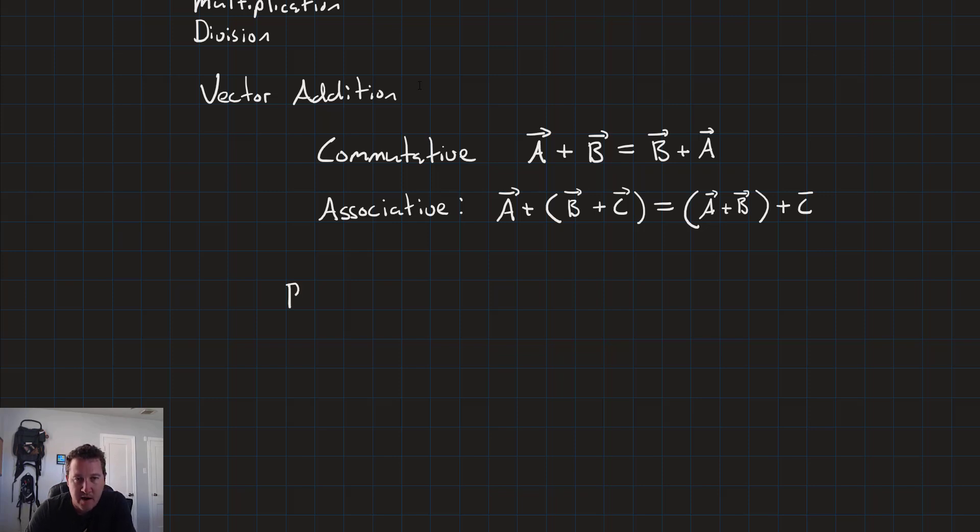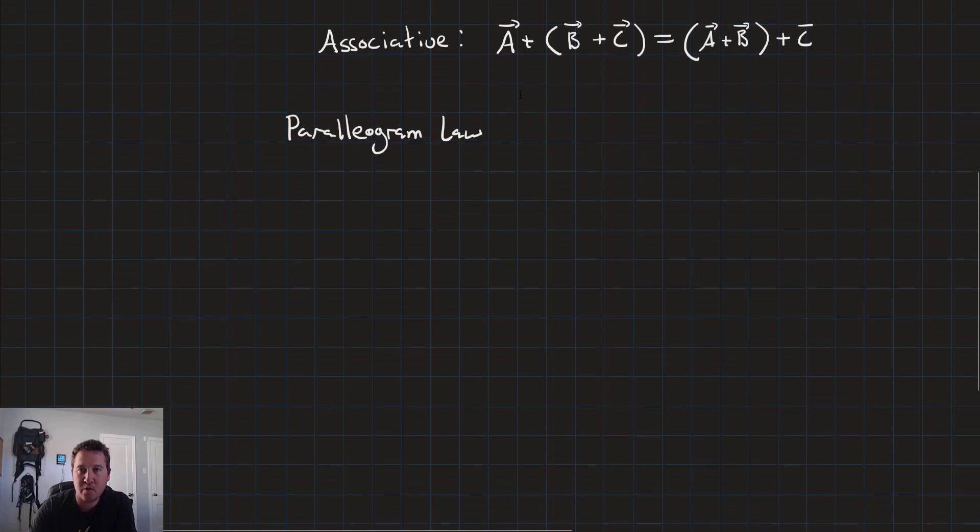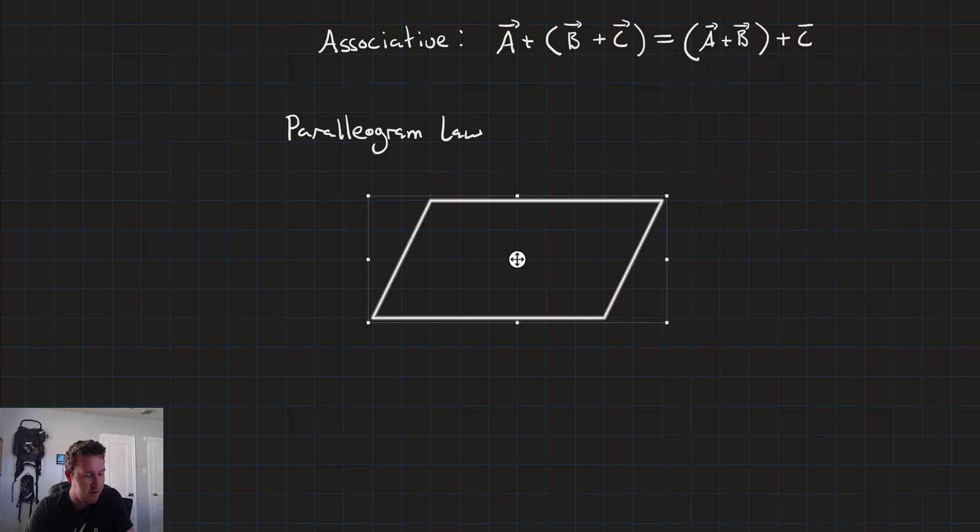Another principle that really comes into play is the parallelogram law, and this really illustrates how vector addition works. So let's go ahead and make a parallelogram. What we see here is that if we have a vector a, let's say that this bottom left corner is the origin. If we have a vector a and we have another vector at the same point in the origin, that's vector b, their sum will be the diagonal of the parallelogram all the way out to that corner. So that will be vector a plus vector b.